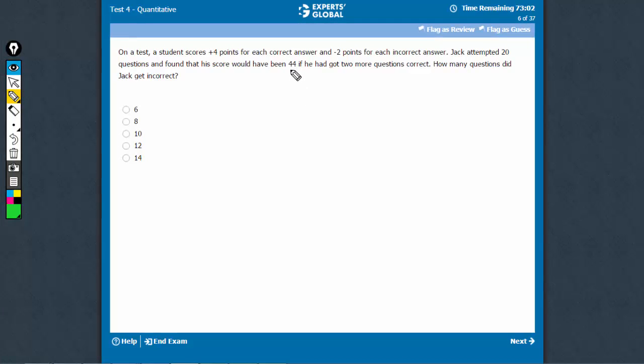Let's find out how many questions he got right in getting 44. If he got x questions correct, he got 4x points, but then he must have got 20 minus x questions incorrect, in which he got minus 2 points.